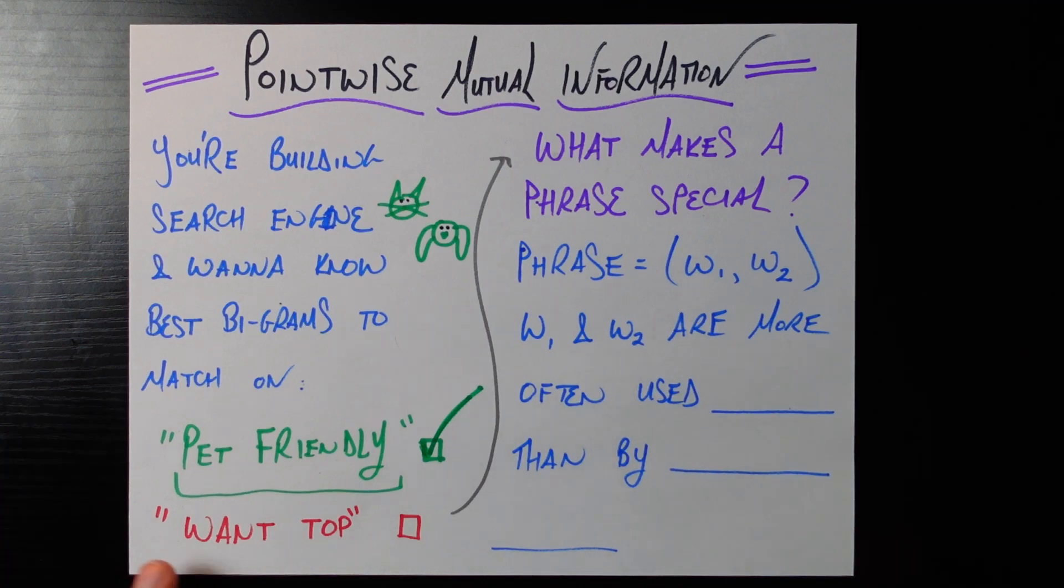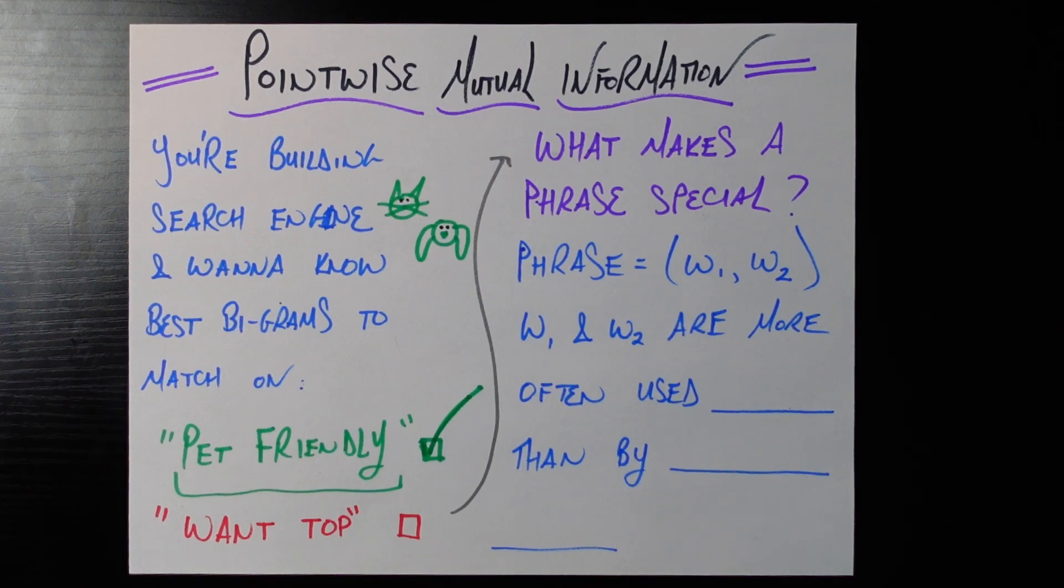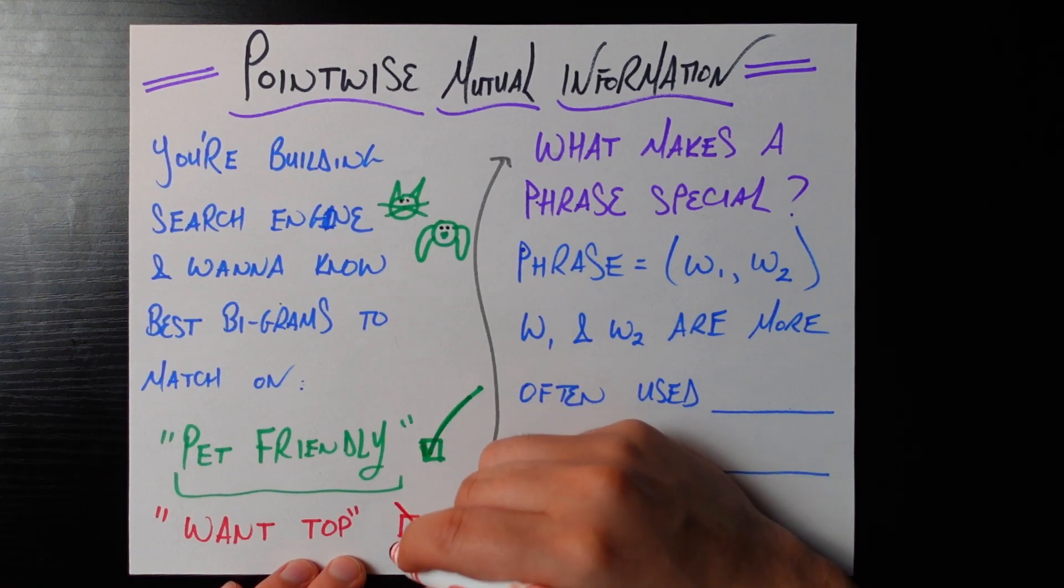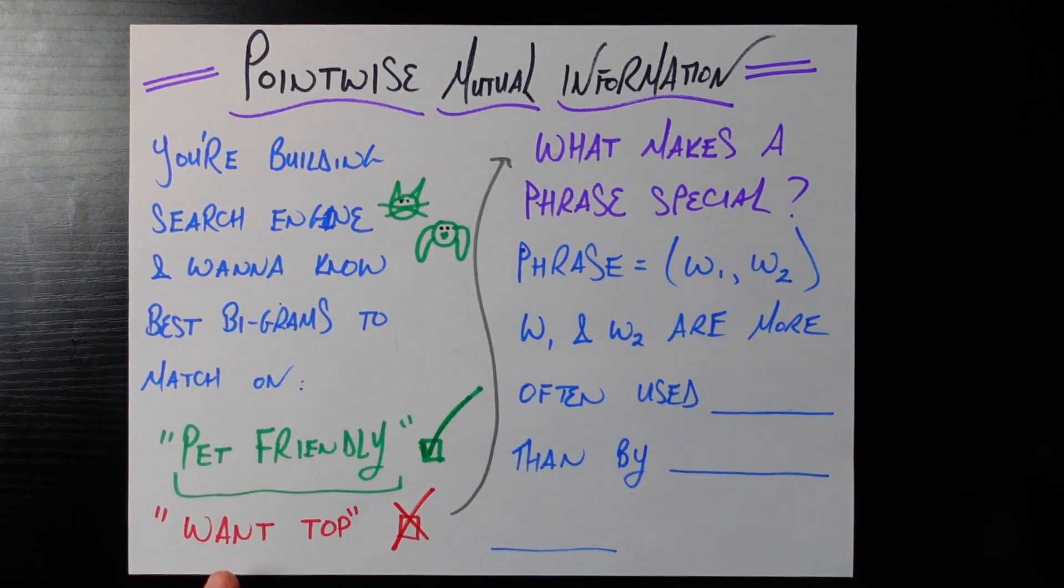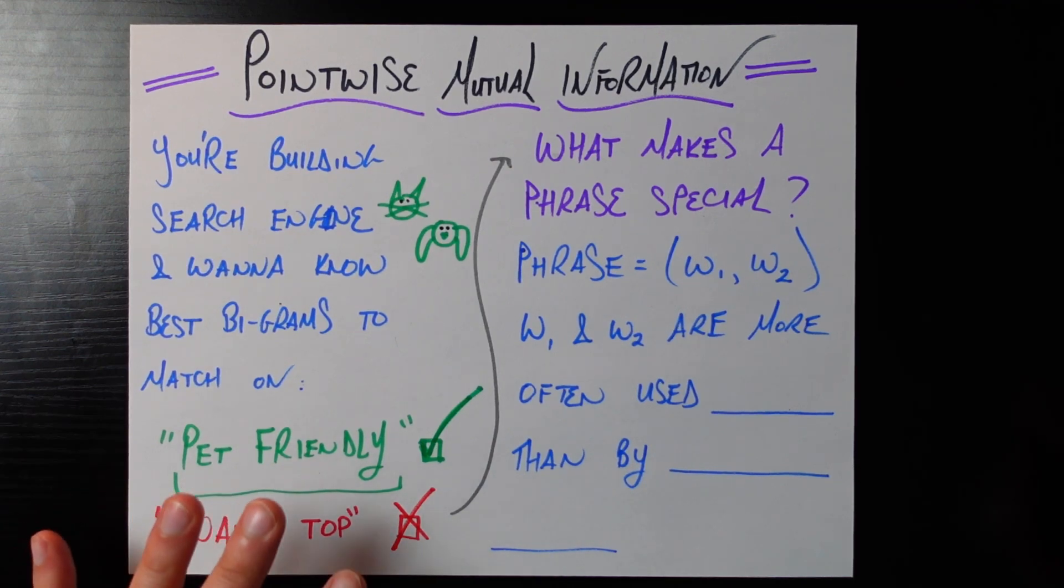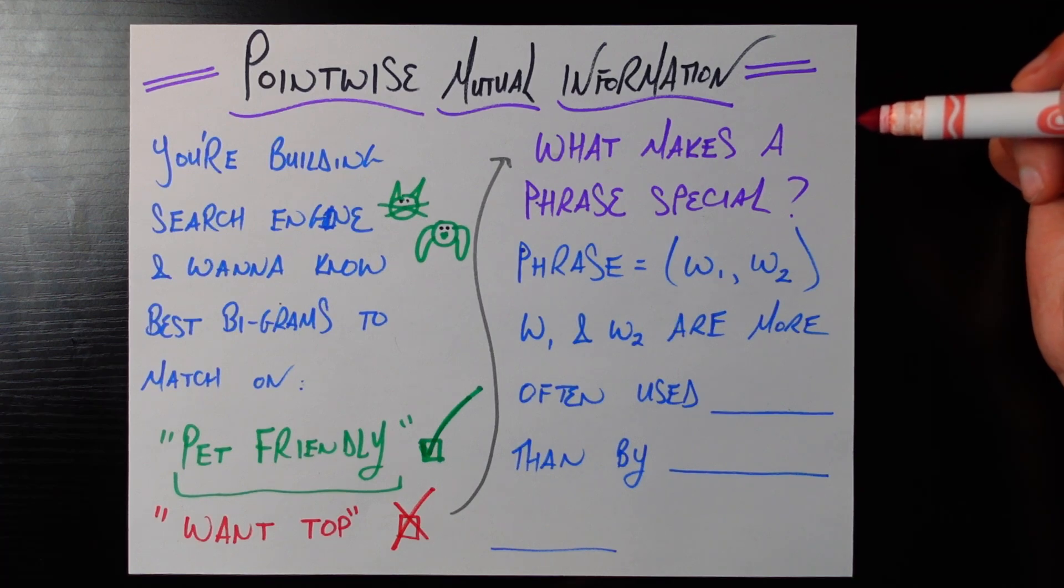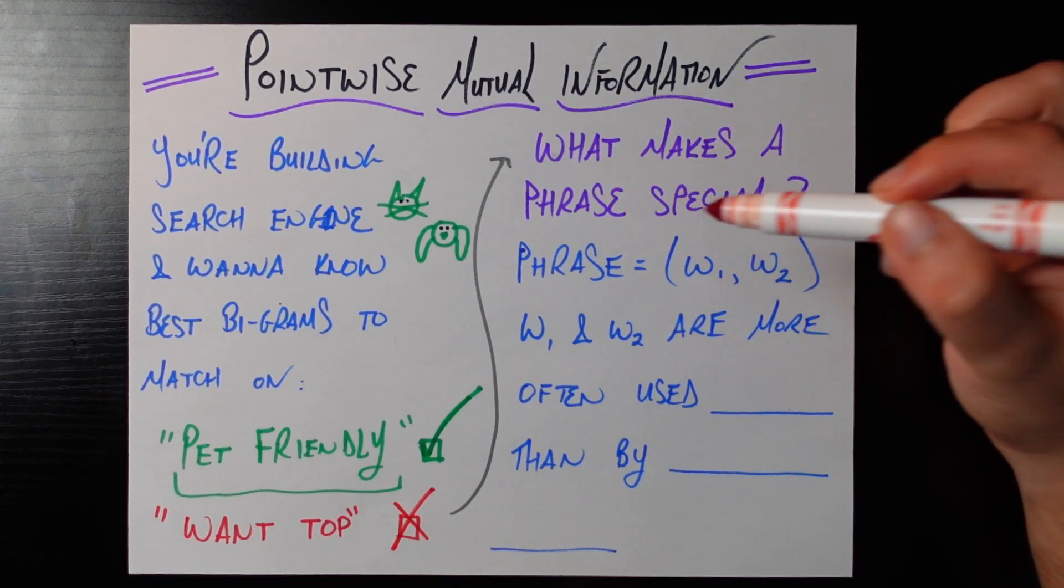Now on the other hand here's another just set of two words want top. I don't really understand what this is trying to say. I don't think anyone would search this. It's not really a logical piece of two words. It doesn't mean anything more than the individual words. And so I probably would not want to index want top or any other combination of two random words that make no sense together. So this is just a little example here but in general we want some kind of system that's going to automatically tell us what makes a phrase special.